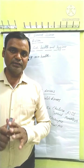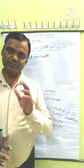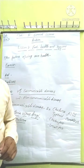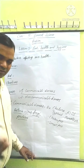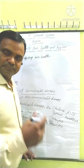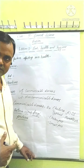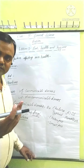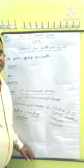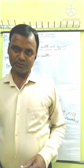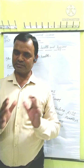Mosquitoes and fleas are responsible factors that spread communicable diseases. Fleas spread cholera and other types of communicable diseases. Mosquitoes spread malaria and other fevers. Those are diseases spread by mosquitoes.